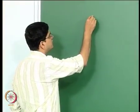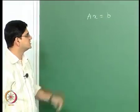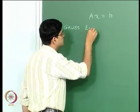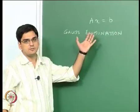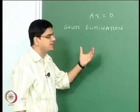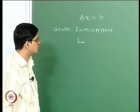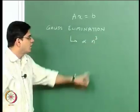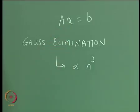Whenever we have any problem of the sort Ax equal to b, we can employ methods such as Gauss elimination to solve a general problem. Gauss elimination is highly computationally intensive because the number of computations required are proportional to n to the power 3, where n is the number of variables in the vector x that we are solving for.